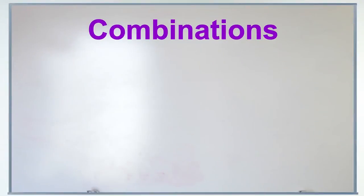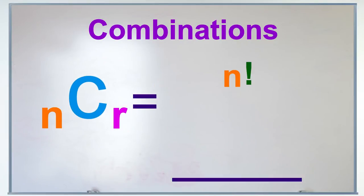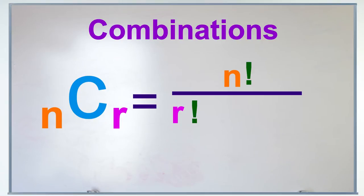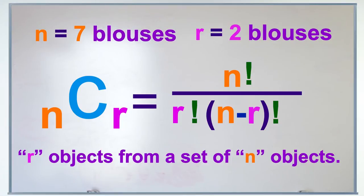Well, we've got a formula for this one, too. nCr, or n factorial over r factorial times the quantity n minus r factorial, where it's r objects from a set of n objects. See? These are the r, these are the n.